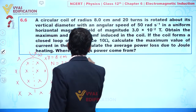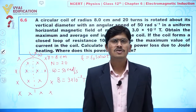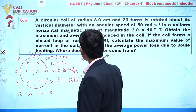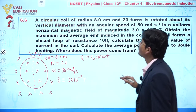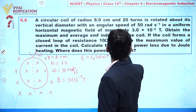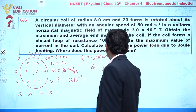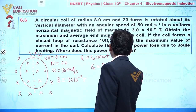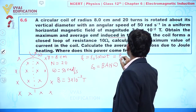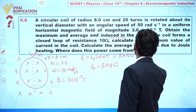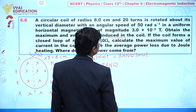We can write the EMF as e = e₀ sin(ωt), where e₀ is the maximum value of the induced EMF. Our objective is to find the maximum and average values. The maximum EMF e₀ is given by NBAω, so we write e = NBAω sin(ωt). Now we substitute all the given values.